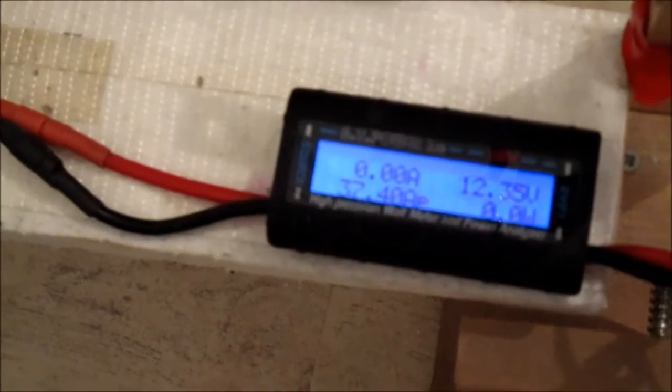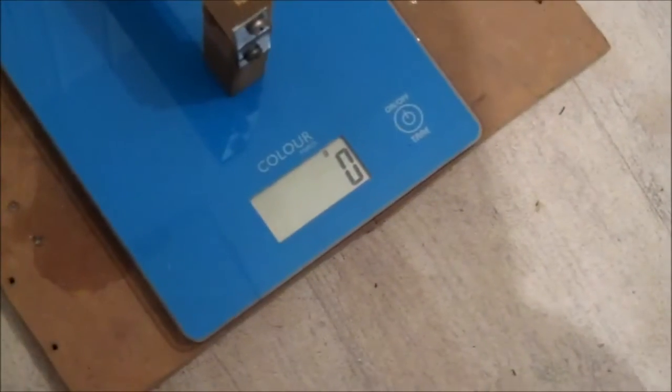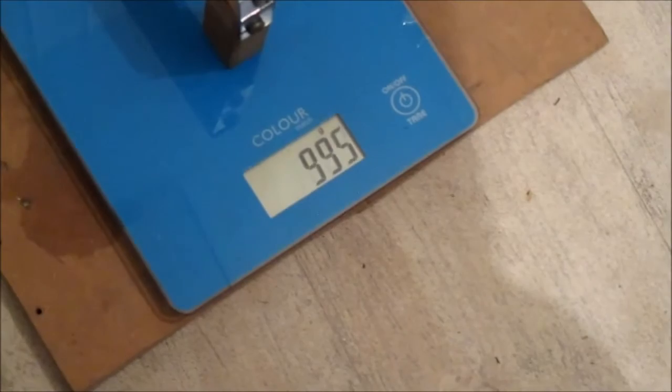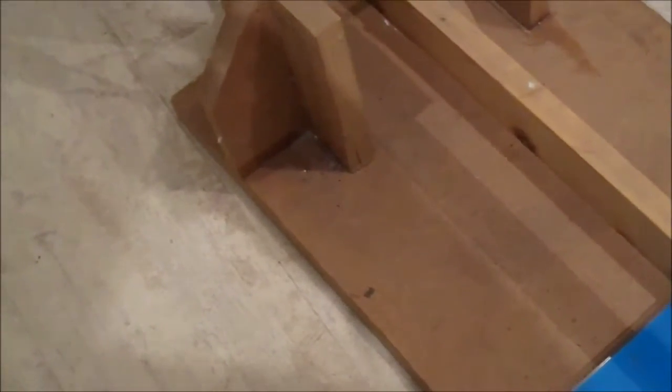That's significantly lower. 37.4 amps, 429 watts. So it's about the same power draw but a lot less thrust. Let's try it on the burst. 37.4 amps, about the same. I think I'll try a 4 cell next, see what numbers we get on that.